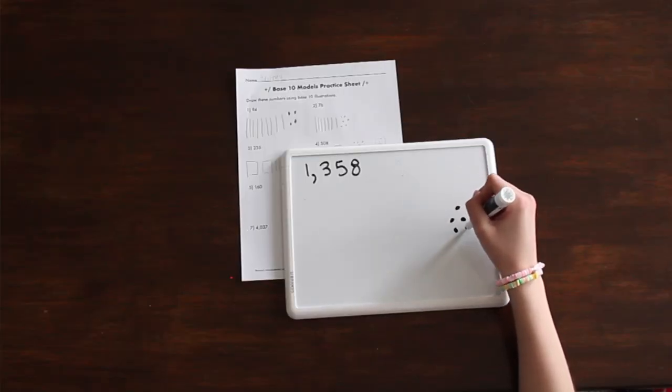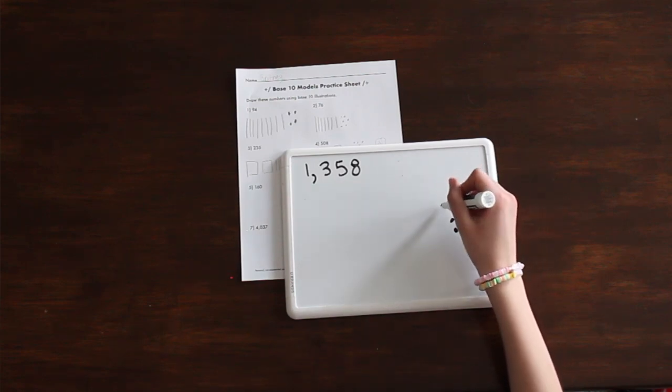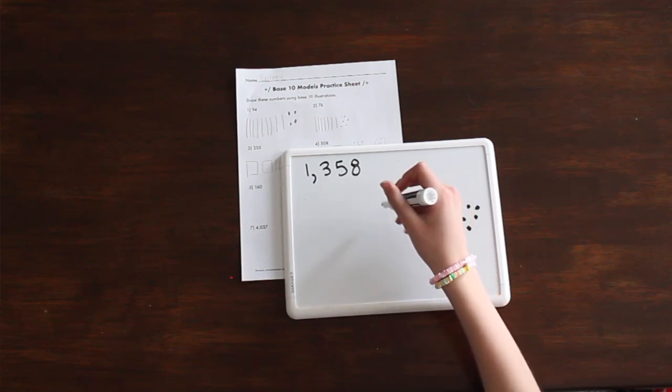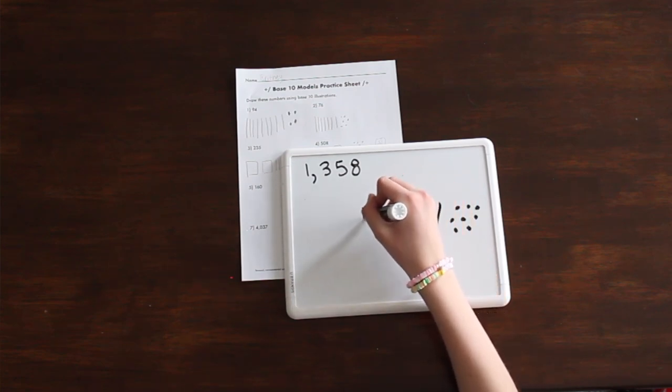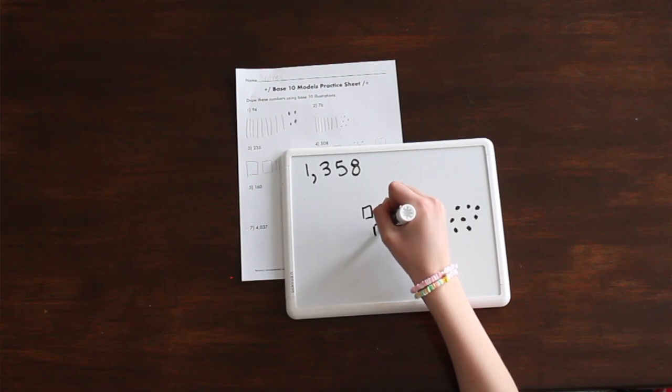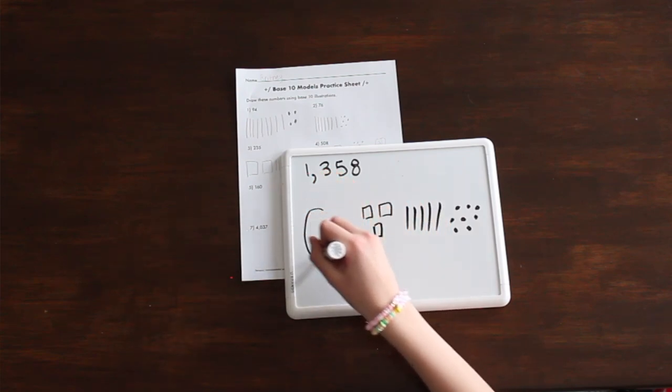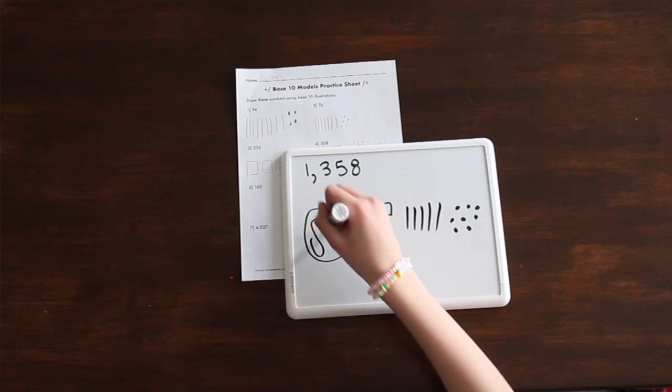Remember, we're drawing dots for ones, lines for tens, squares for hundreds, and when you get into the thousands, I encourage students just to do a larger circle because it seems like fourth graders really want to learn how to draw the cube and they spend so much time drawing this cube and not as much time doing their math.